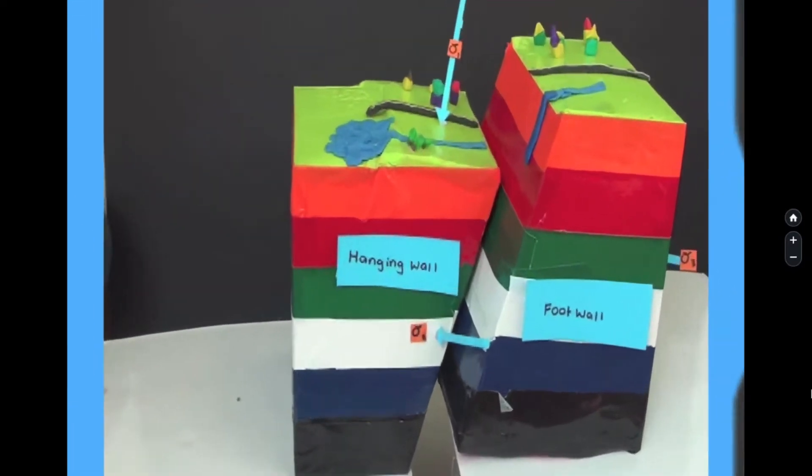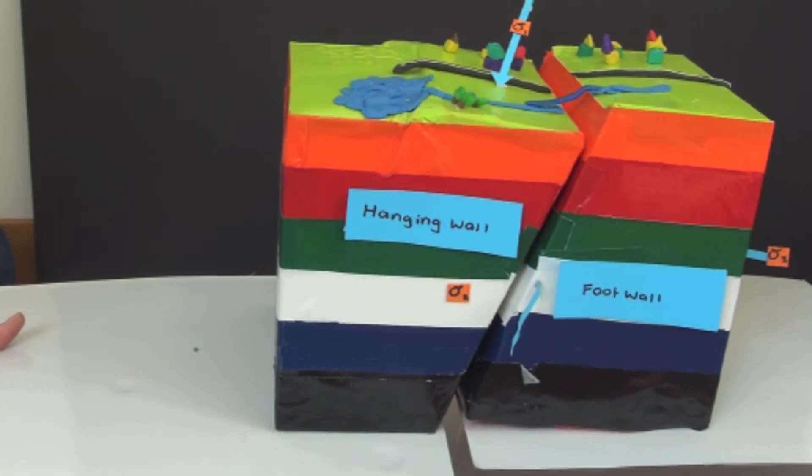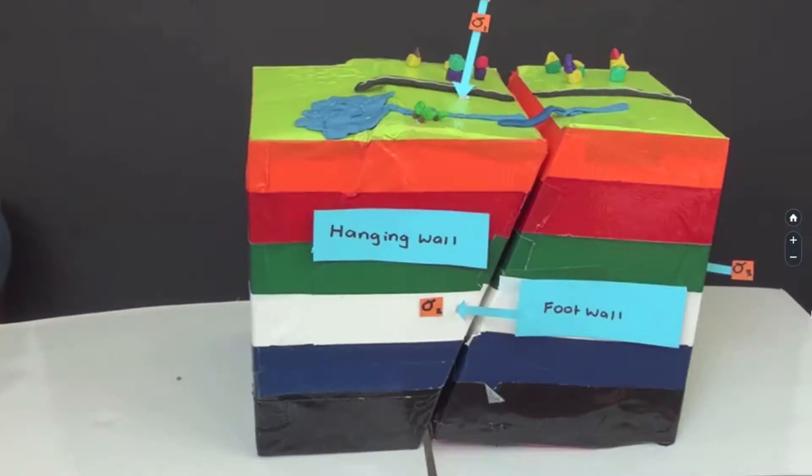Oblique is just a combination of strike slip and reverse or normal faults. Now let's look at the indicators.